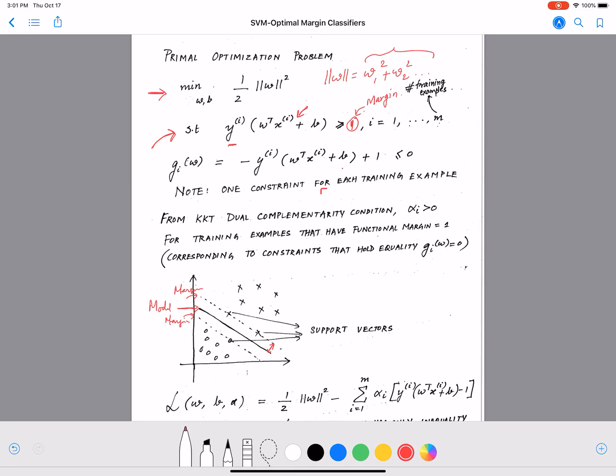So it fits the way gᵢ(w) is supposed to be constructed. So we have here some changes where we take the yᵢ(w transpose xᵢ plus b) to the other side where we have 1 - yᵢ(w transpose xᵢ plus b) less than or equal to zero. So now this becomes our inequality constraint.